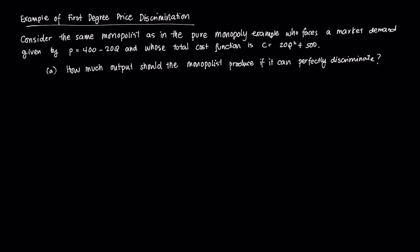We're going to use the same function or the same monopolist we had in our pure monopoly example. If you recall, that monopolist faces a market demand function of P equals 400 minus 20Q and it has a cost function equal to this.